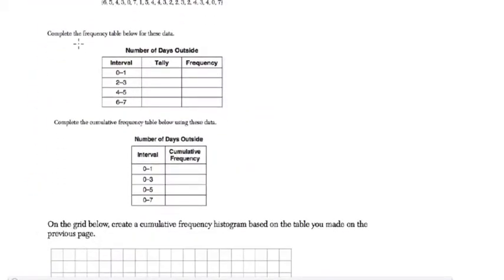And the next one: 20 students were surveyed, and here's their survey data about the number of days they play outside. Complete their frequency table. So the first interval is from 0 to 1. So that's this student right here - 0, and 1, and 0. So 1, 2, 3 students. Next one, so those are crossed out now.